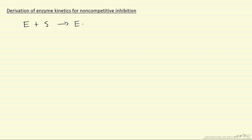We're going to look at enzyme kinetics for non-competitive inhibition. This is where we have an enzyme reacting with a substrate to make an enzyme complex, and then this enzyme complex reacts to recreate the enzyme and form our product. We're going to assume this step is irreversible, or rather that we're at low concentrations of product, in order to derive our rate expression.